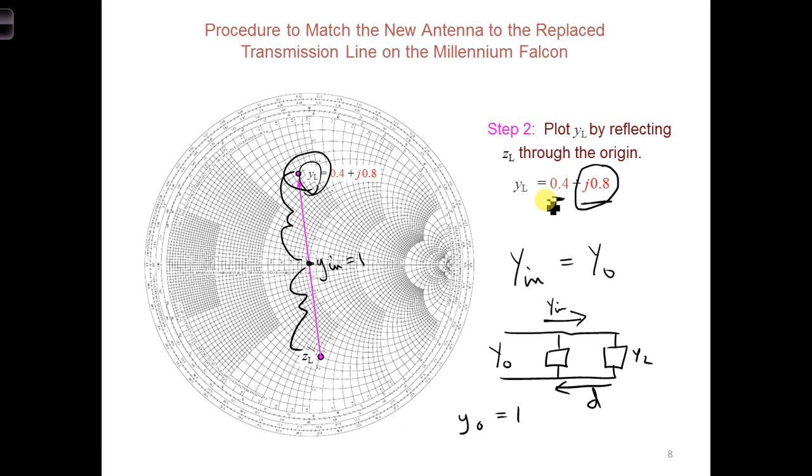In other words, we can't completely match the load to the transmission line by adding an inductor or a capacitor right at the load, because the real part of the normalized admittance, 0.4, would not be matched to the transmission line.